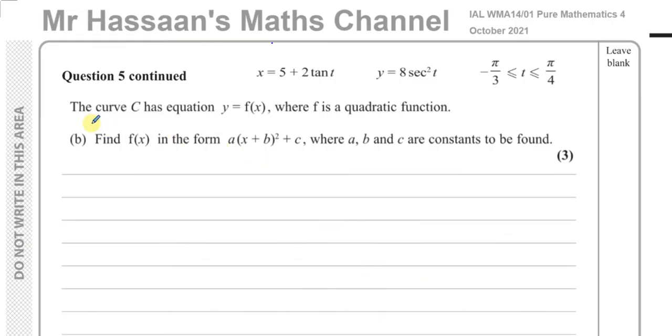Okay, now for part B, it says the curve C has equation y equals f of x, where f is a quadratic function. Find f of x in the form a times x plus b squared plus c, where a, b, and c are constants to be found. So here is the equation in parametric form. We need to now write it in this Cartesian form where y is some function of x. They've told us it will be some sort of a quadratic form when we write it. So what we're going to do now is we're going to try to combine these together and eliminate the t.